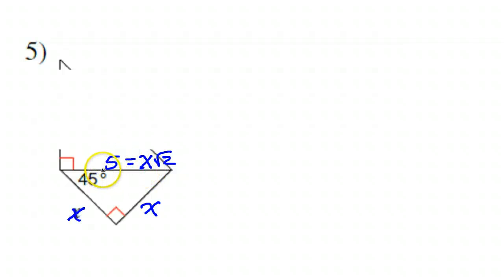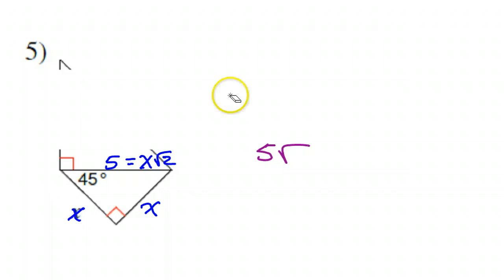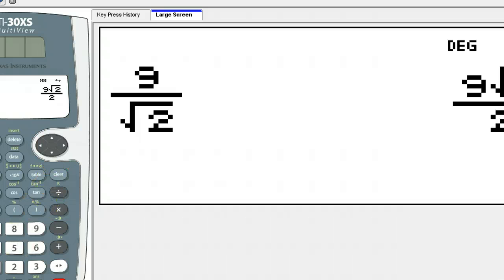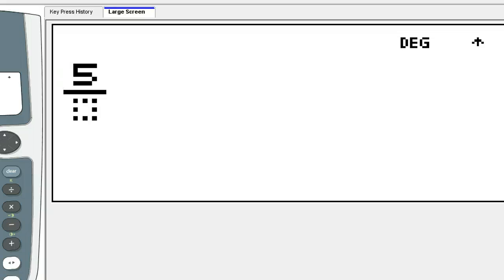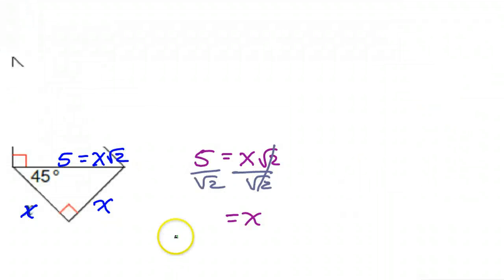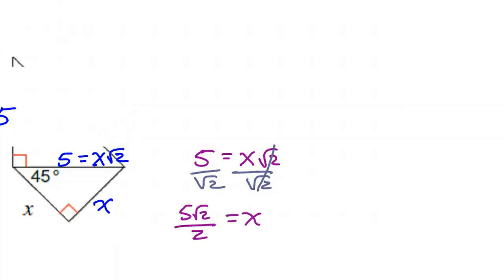When you have a normal number for the hypotenuse, you need to solve this little equation. So off to the side: five equals X radical two. If I want to find X, I divide both sides by radical two. Five over radical two is just five radical two over two. So X equals five radical two over two — that's what we were supposed to find.